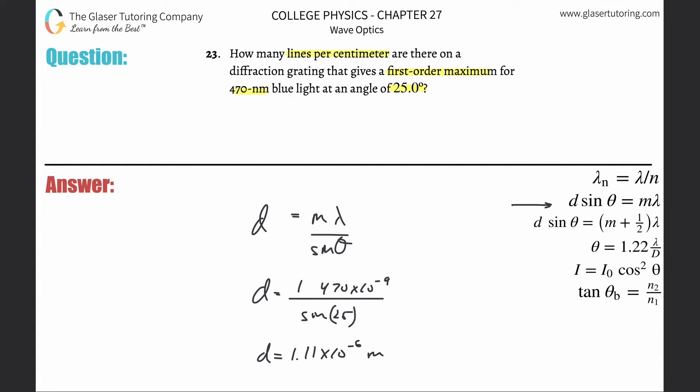Now they want centimeters, so convert this to centimeters by multiplying by 100. That's 1.11 times 10 to the minus 4th centimeters. This really represents centimeters per line, but what we want to find is lines per centimeter.